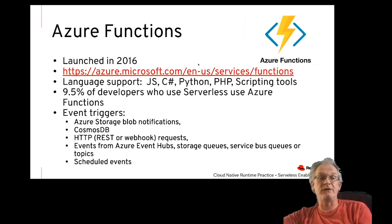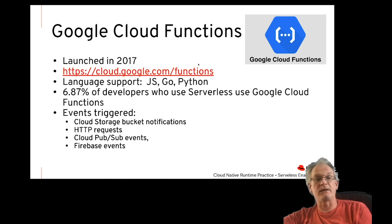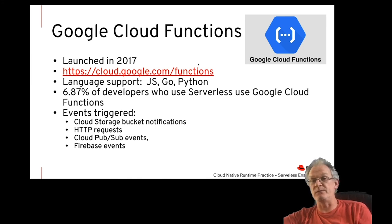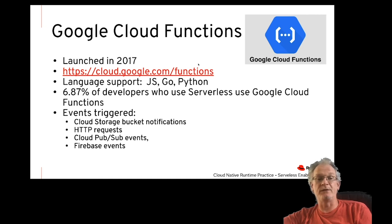One key differentiator of Azure Functions is the underlying OS, which in this case is Windows, as opposed to AWS Lambda. Google launched Cloud Functions in March 2017. Google Cloud Functions provide a more limited set of language options — JavaScript, Go, and Python — and scored low on the survey with just under 7% of respondents indicating use. One key differentiator is the integration with Firebase, opening up Cloud Functions to Firebase mobile events.